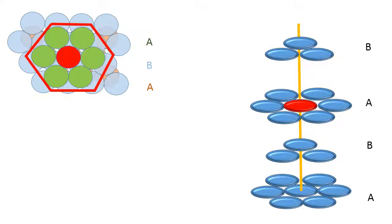Now, the question is: what would be the coordination number? Let us focus on the red colored sphere. I can clearly see that in the same layer as the red colored sphere, I have 6 spheres surrounding it. Therefore the coordination number becomes 6. But if I see carefully, there are 3 blue colored spheres which are touching the red sphere.